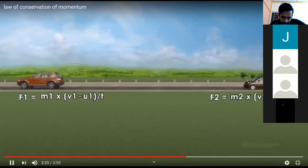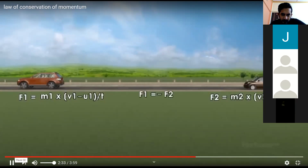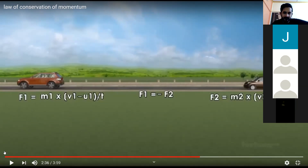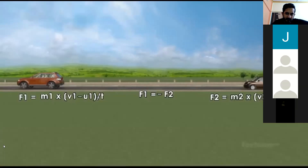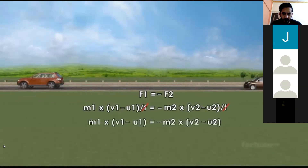According to Newton's third law, each action has an equal and opposite reaction, meaning the forces can be expressed as F1 = −F2. Because both forces are equal and opposite, we can write M1 × (V1 − U1) / T = −M2 × (V2 − U2) / T. We can cancel T, the common factor of time, giving M1 × (V1 − U1) = −M2 × (V2 − U2).